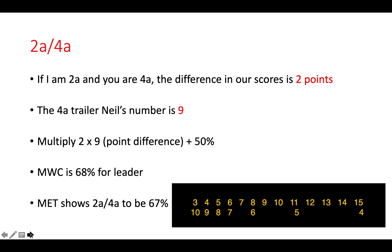If the score is two away, four away — I am two away, you are four away — the difference in our scores is two points. The four away trailer's Neil's number is nine; you can see nine is beneath four. Multiply two by nine, plus 50%. The match winning chances for the leader is 68%. And the match equity table at two away, four away, is 67%. Again, very close and very accurate.